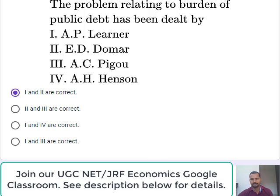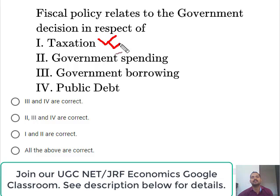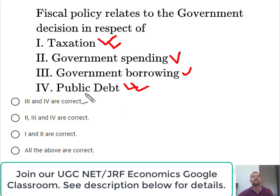The next question asks what fiscal policy relates to in terms of government decisions. Whatever the government does related to money — spending or borrowing — is fiscal policy, whereas whatever the RBI does for the economy is monetary policy. Taxation and tax rates imposed by government are fiscal measures, as are government spending, government borrowing or lending, and public debt. So the correct option is all of the above.